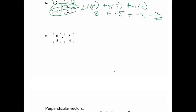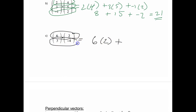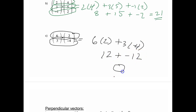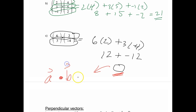One more example to make sure we have it down. Dot product means multiply the corresponding parts: 6 times 2, plus 3 times negative 4. So I get 12 plus negative 12, which actually gives me 0. Zero is a very, very important result. Any time you take the dot product of two vectors and get 0, that's special — it means those two vectors are perpendicular.